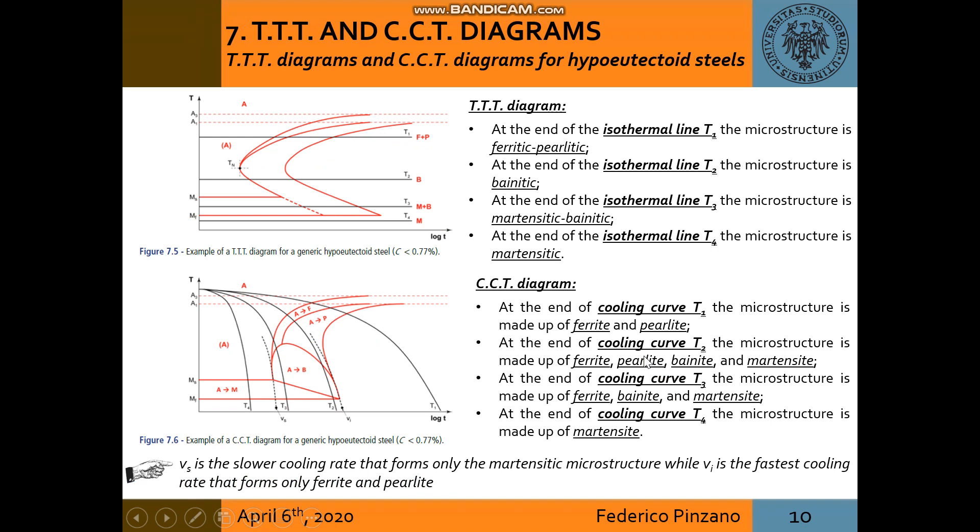Here is a resume of what happens for TTT diagram and CCT diagram. We can simply read that at the end of isothermal line T1, for example, the microstructure is ferritic pearlitic, and so on with the other cases. For CCT diagram at the end of the cooling curve T1, for example, the microstructure is made up of ferrite and pearlite, and it's the same for the others.